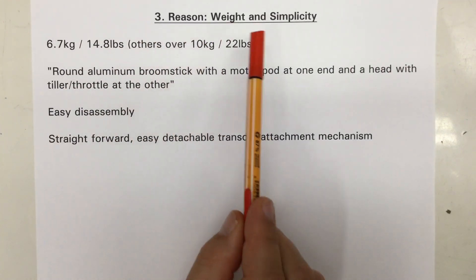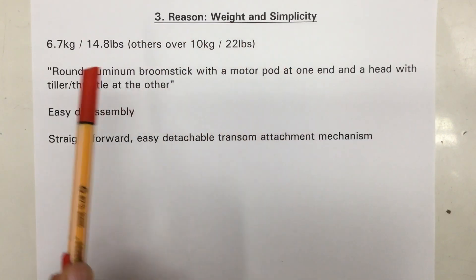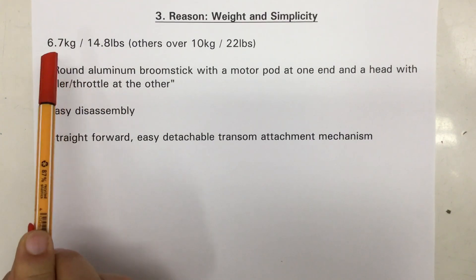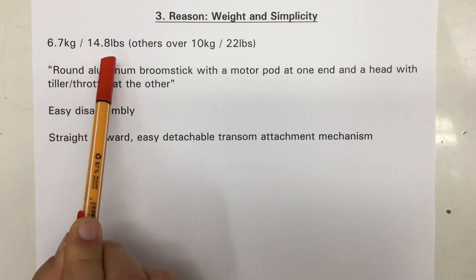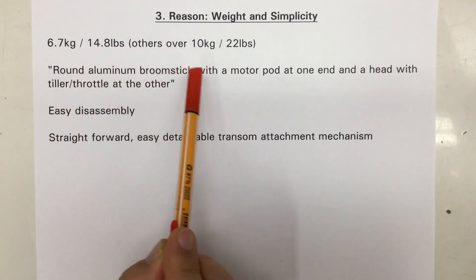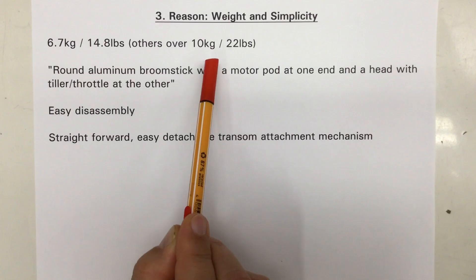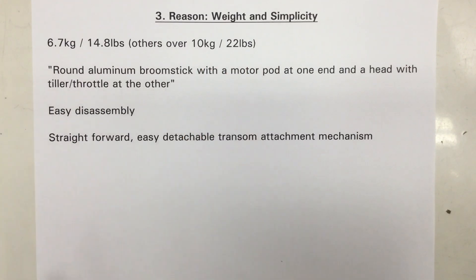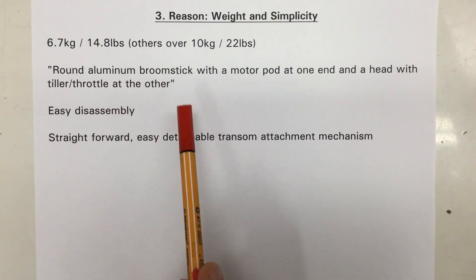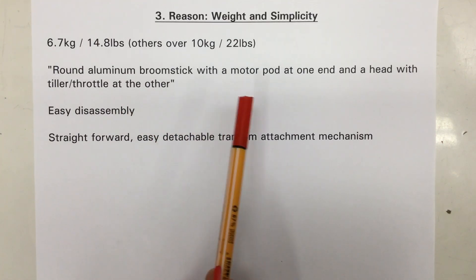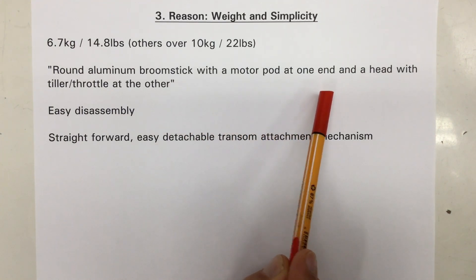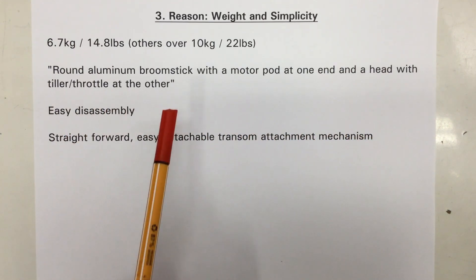The third reason is weight and simplicity. The Haswings come in at 6.7 kilograms, according to specification, that's 14.8 pounds, while the E-Propulsions and Torquidos are all over 10 kilograms, or 22 pounds. If I had to describe the Haswing Protoras or other Chinese trolling motors, I would say they are round aluminum broomsticks with a motor pod at one end and a head with a tiller throttle at the other.